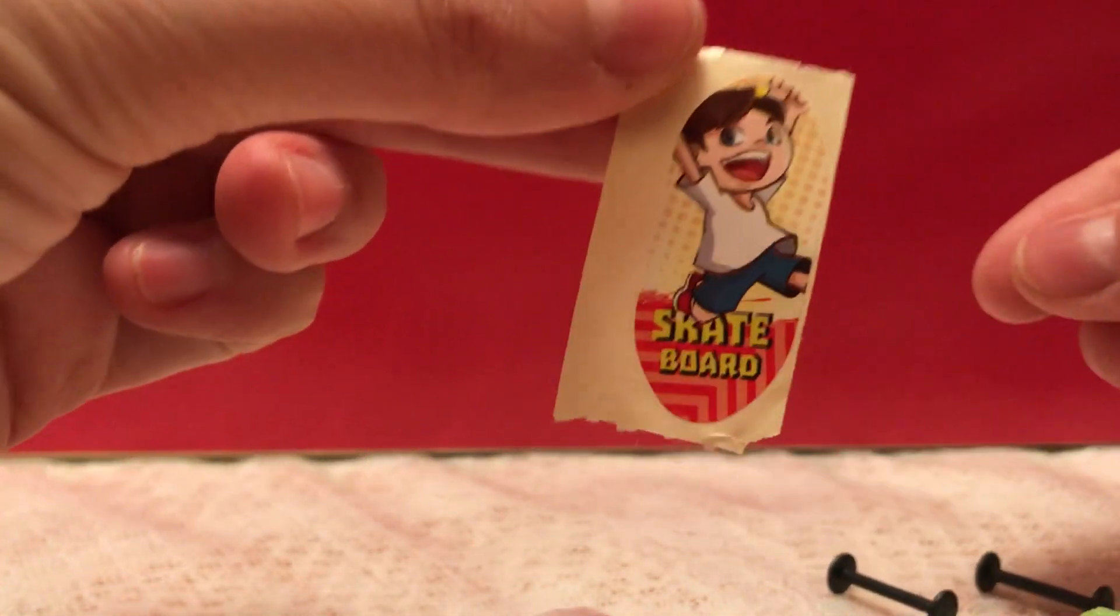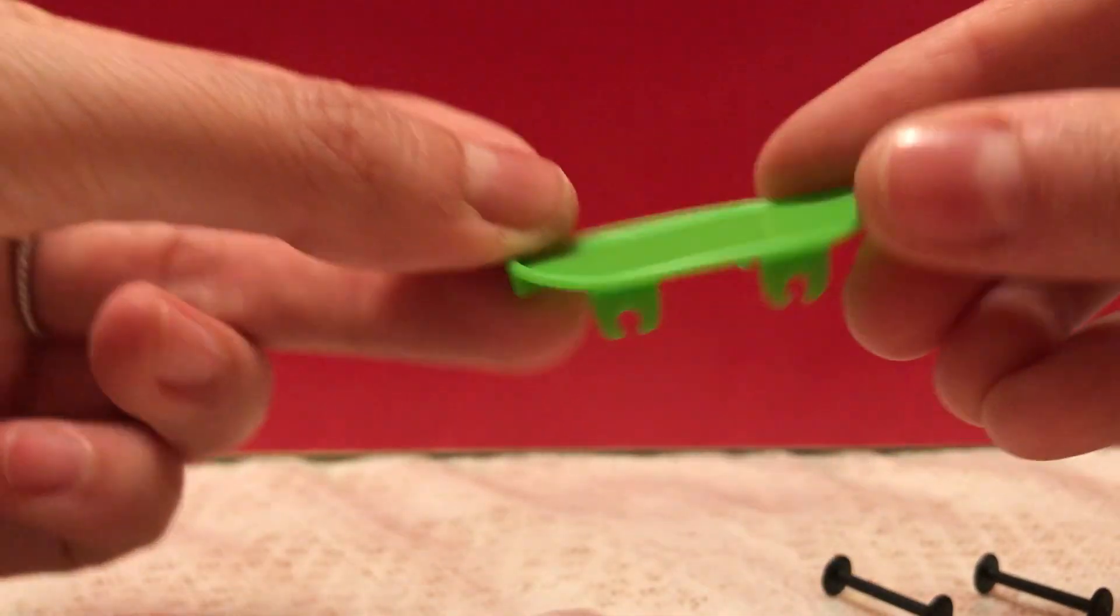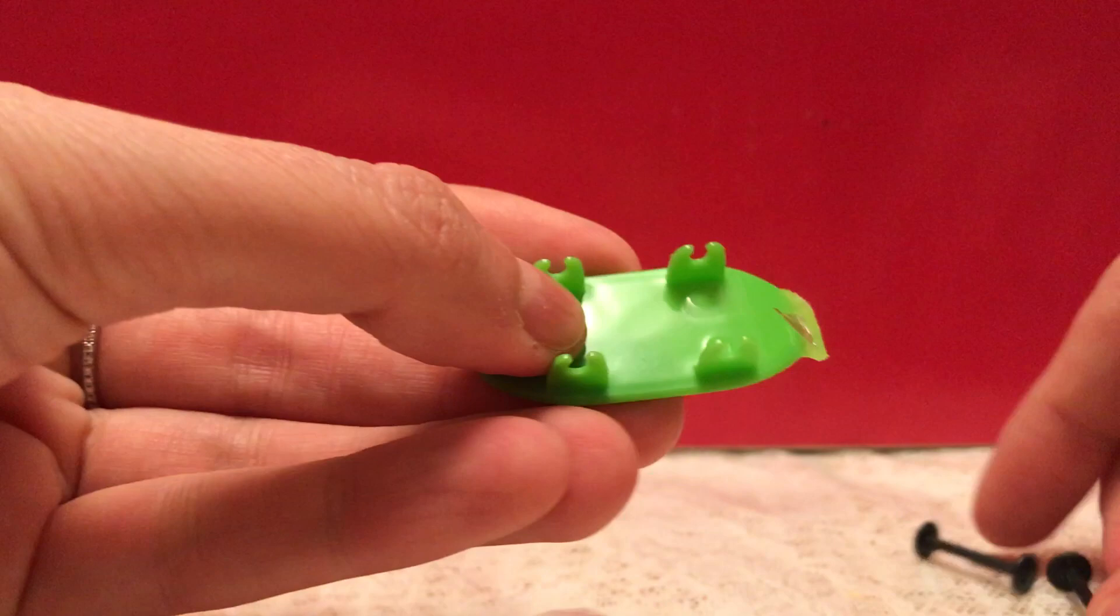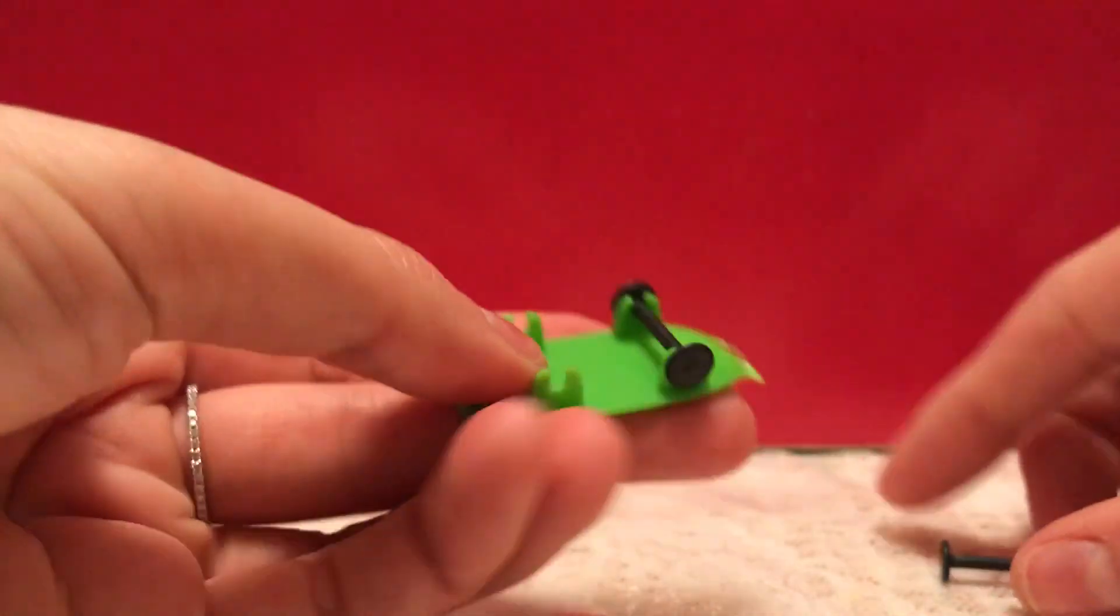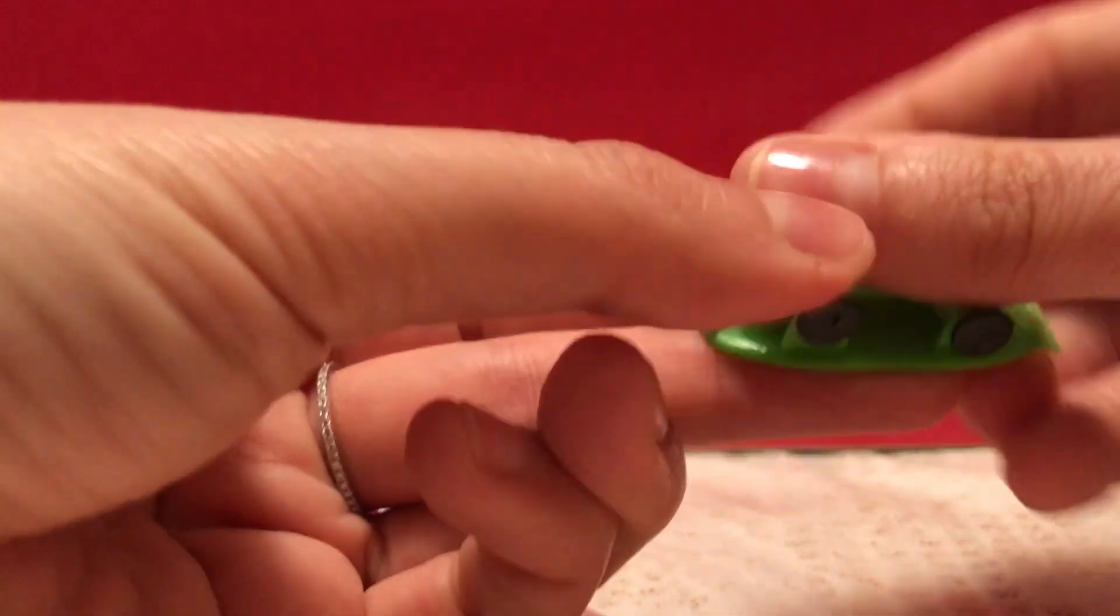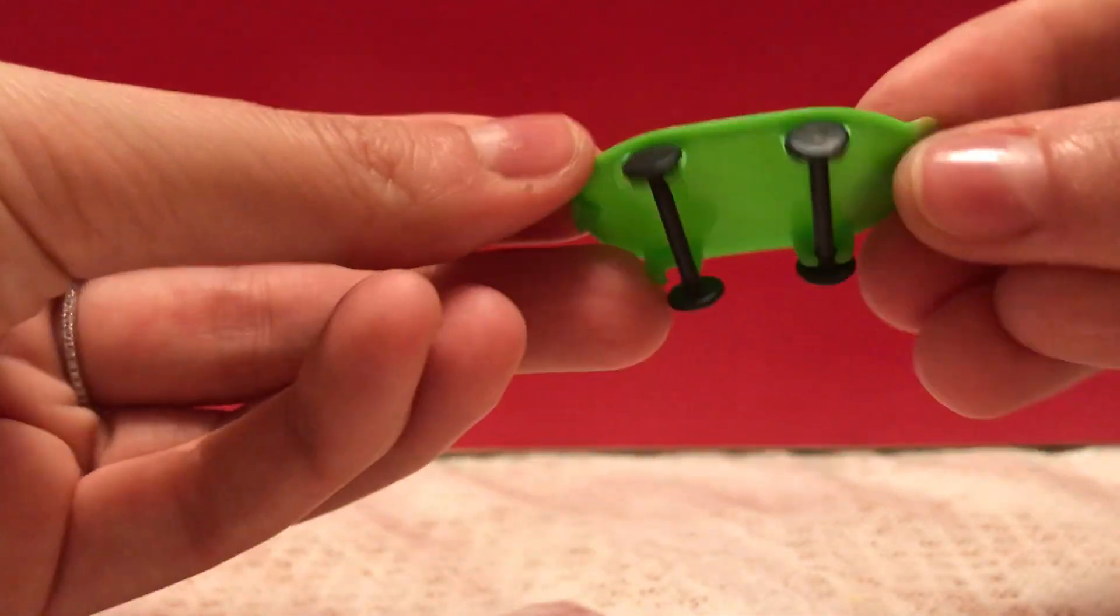Let's open this up. Wow, look at that. A cool skateboard. So this one looks pretty simple. We're just going to put on the wheels. Pretty easy to assemble.